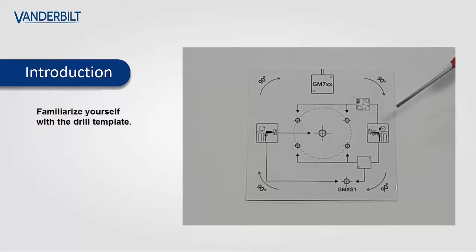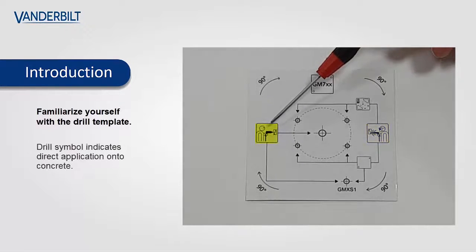There are two main symbols: a steel symbol which is depicted by a weld, and a concrete symbol which is depicted by a drill.